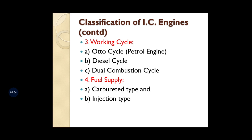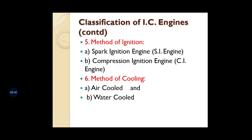The fourth classification is based on the type of fuel supply inside the engine. The first type is carbureted — it uses a carburetor. The second is injection type, used in diesel engines, where fuel is injected directly inside the engine.